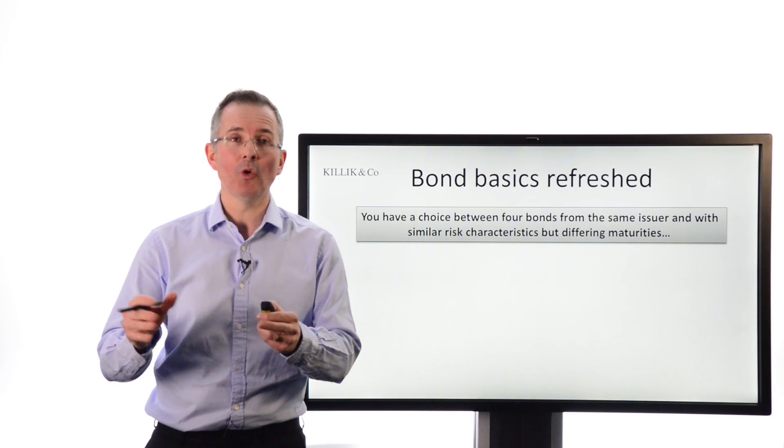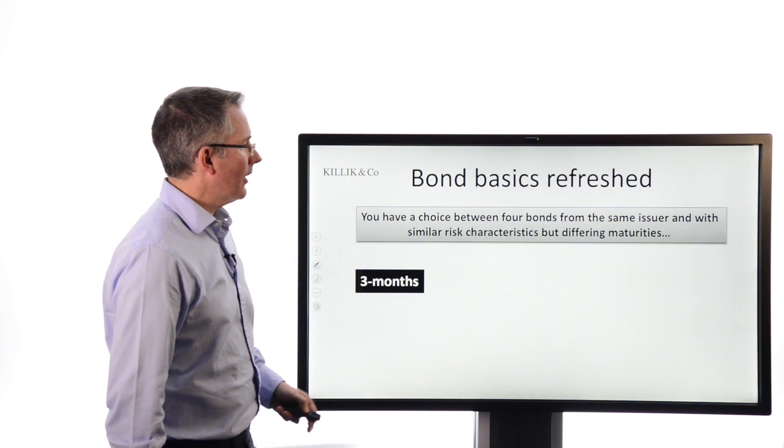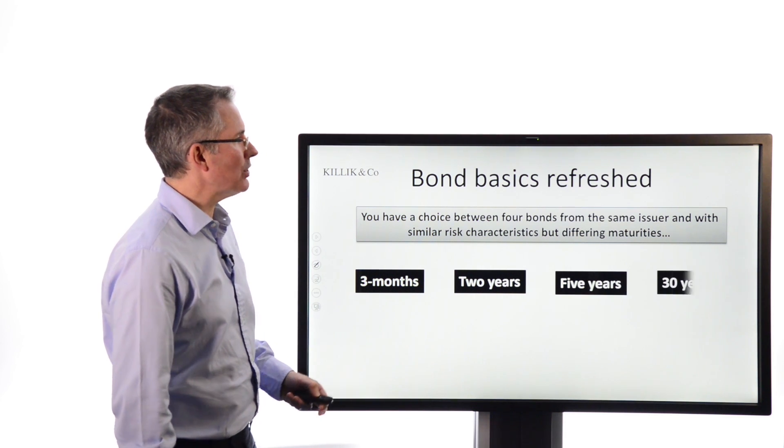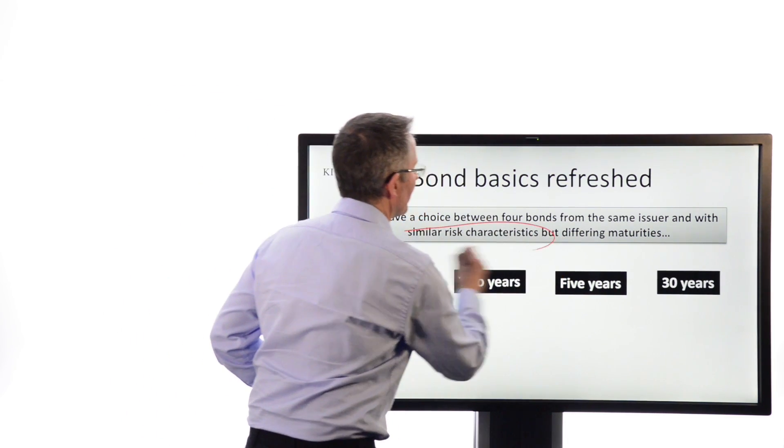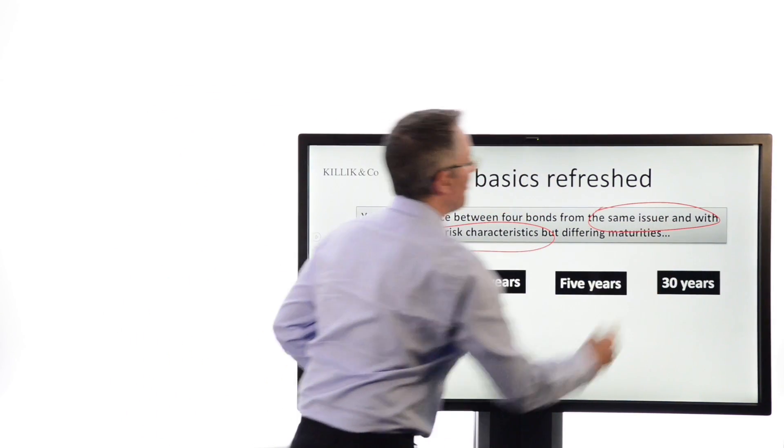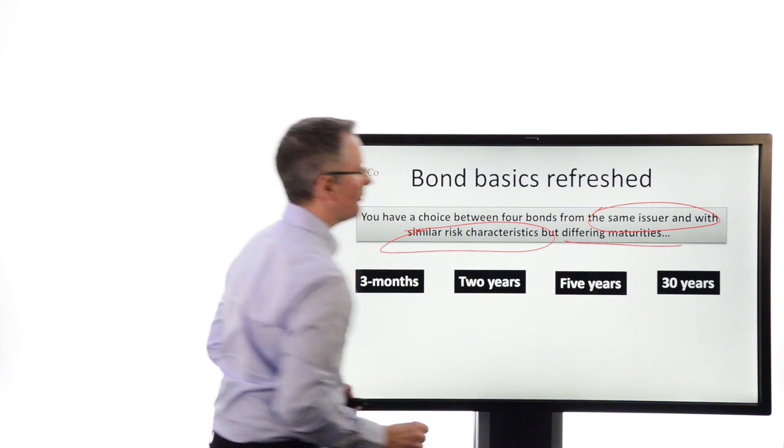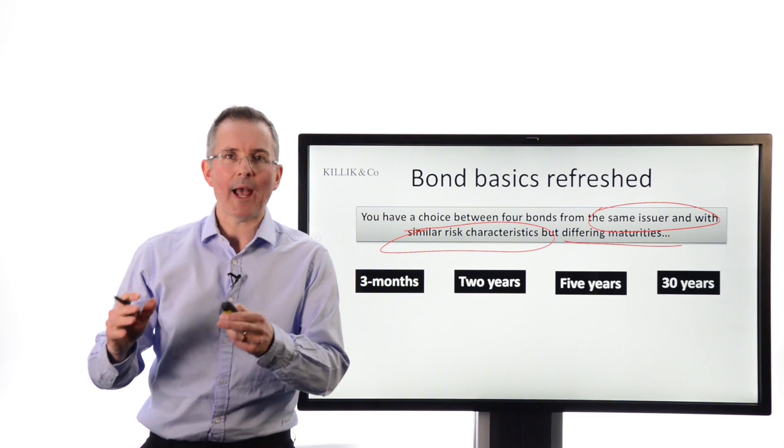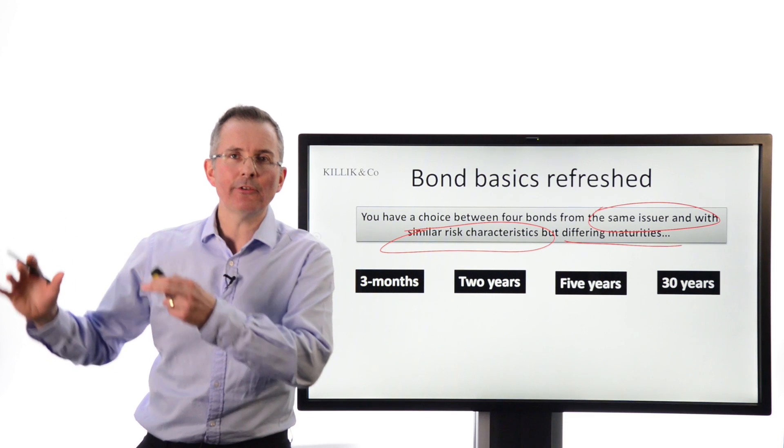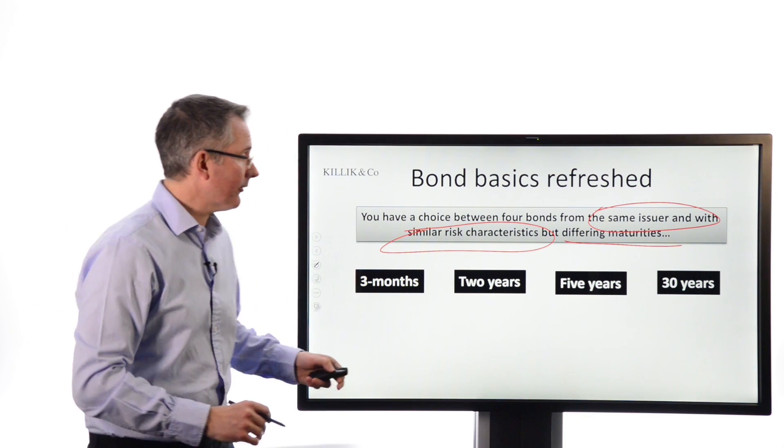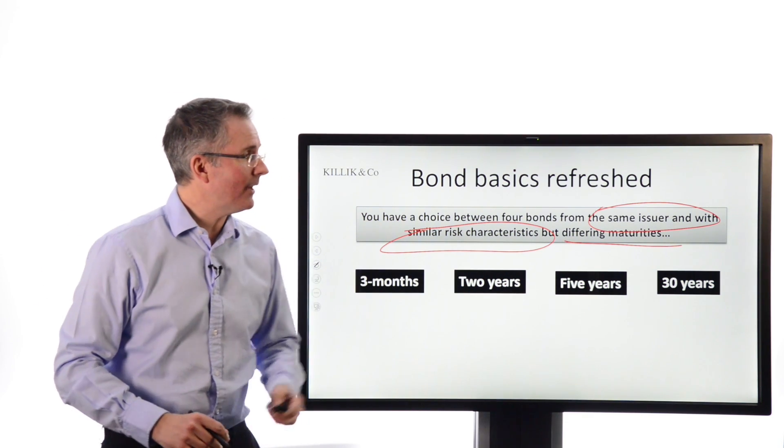Basically, let's do some basics. First of all, if you had a choice of four bonds from the same issuer and with similar risk characteristics, that's quite important, so we're comparing apples with apples, but differing maturities, I've just picked four, how would you expect the returns to look? And the answer, basically, is this.